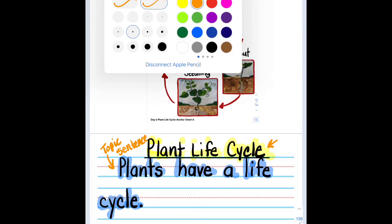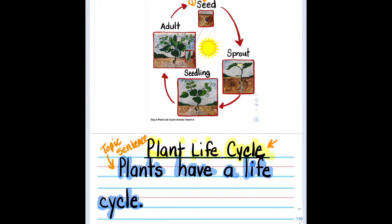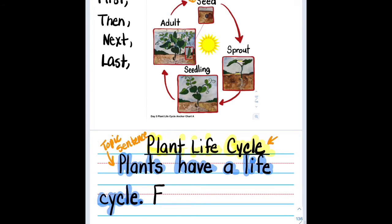So who can give me a really good sentence? And remember we want to do it in order. And we're going to use words to show order. Like first, I'll write them up here for you. First. Then. You can even use next if you want to. And last. Those are good time order words we can use so the reader knows the right order. So what could we write about the seed?